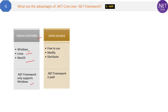The second advantage of .NET Core is that it is completely open source, which means it is free to use, modifiable, and distributable. Whereas .NET Framework is not open source — companies have to purchase a license to run .NET Framework-based applications on their servers. For students it's free, but not for companies, whereas .NET Core is free for all, including companies.